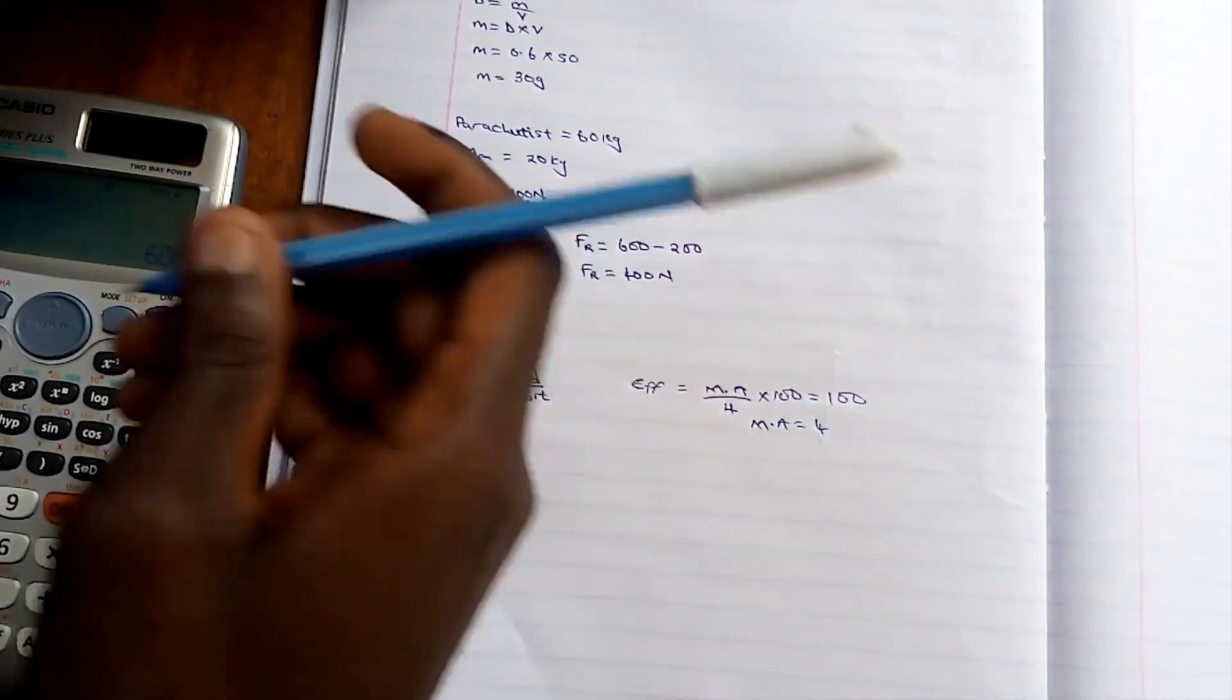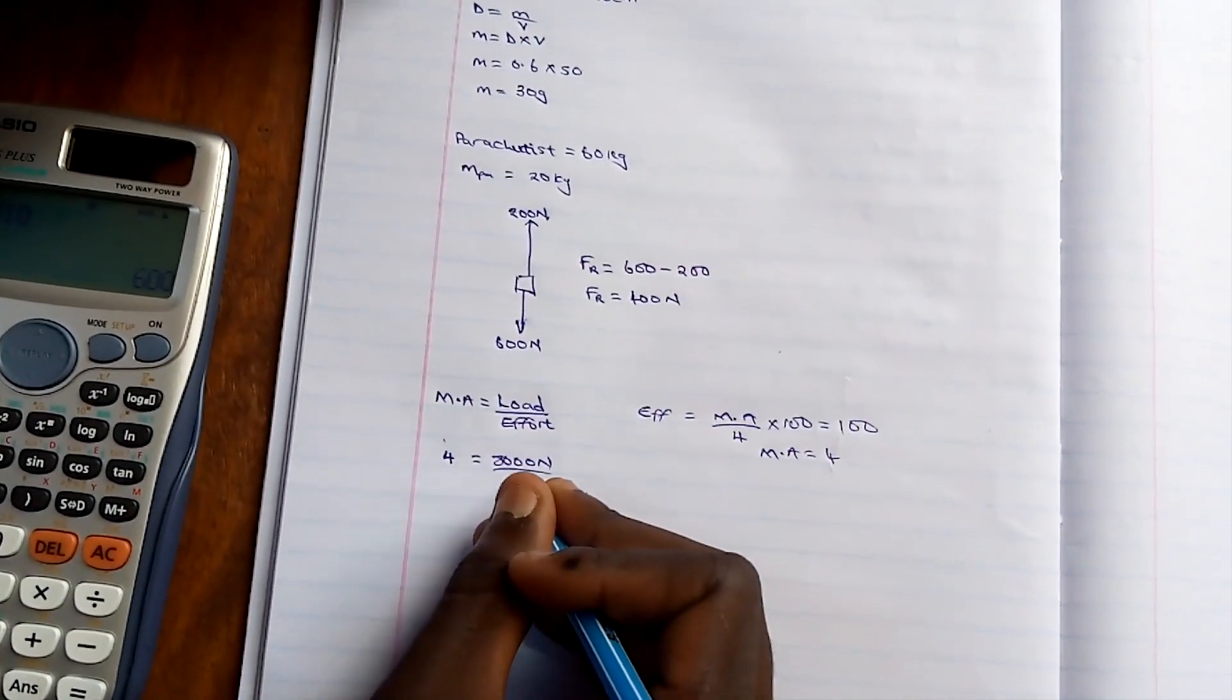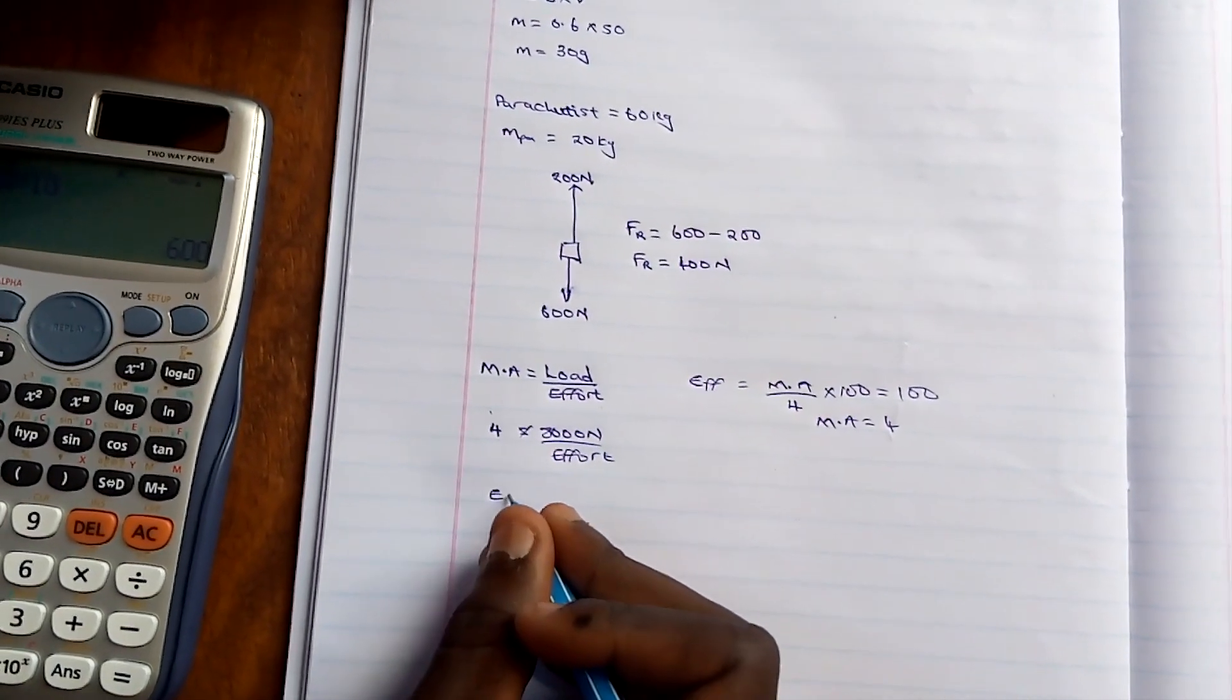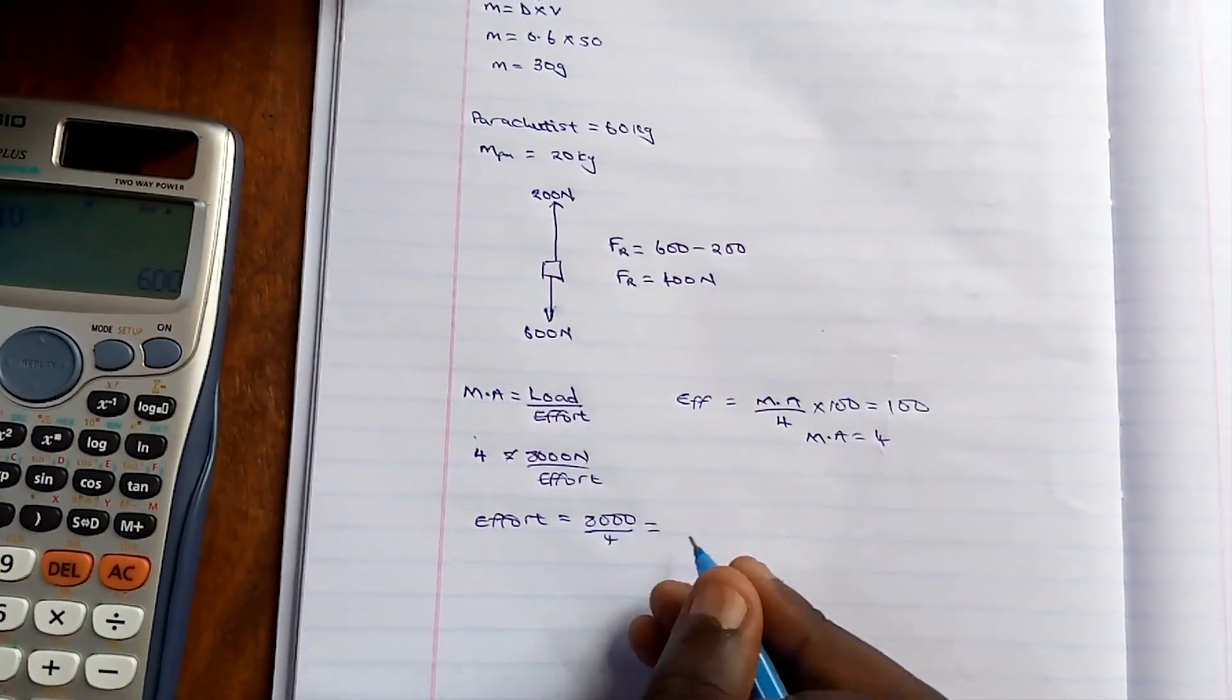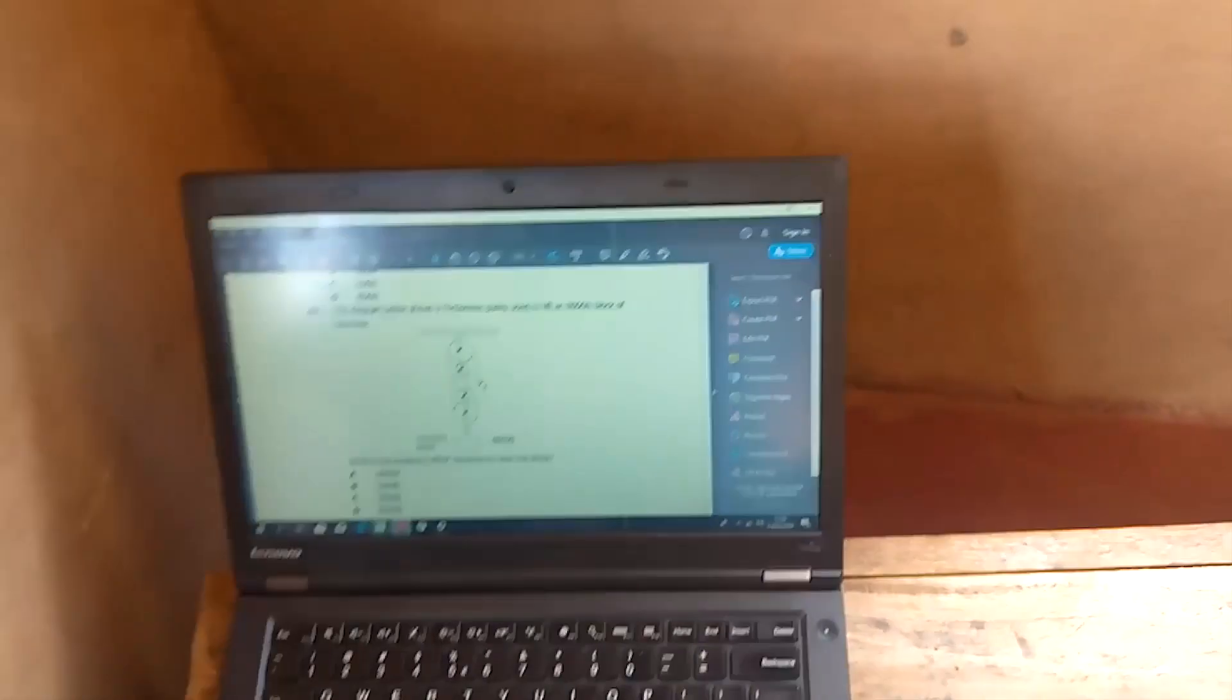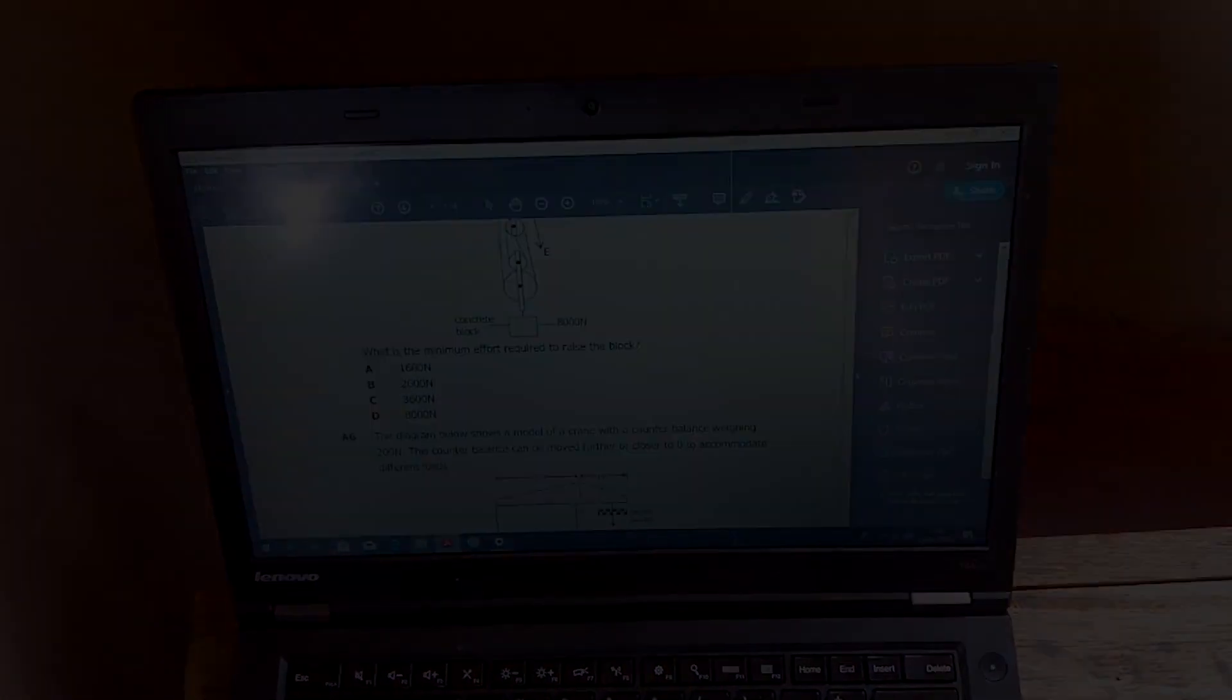So this is 4 is equal to, what is the load? The load is 8000 newtons over the effort. So when we cross multiply, effort will be equal to 8000 over 4, which will be equal to 2000 newtons. And in this case, the answer is B. That's the minimum effort required to raise the block.